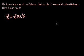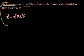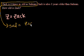It says Zach is 4 times as old as Salman. So if Zach is Z, from this first sentence — Zach is 4 times as old as Salman — that means Salman's age is equal to Zach divided by 4. We can leave it like that.